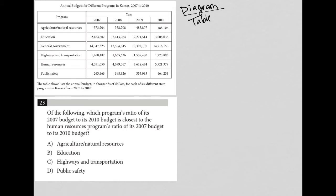Anytime you have a table, my suggestion is that you read the title. So in this case, it says annual budgets for different programs in Kansas 2007 to 2010. Look at what information is provided within the table itself. So we have programs and then we have different years. And lastly,